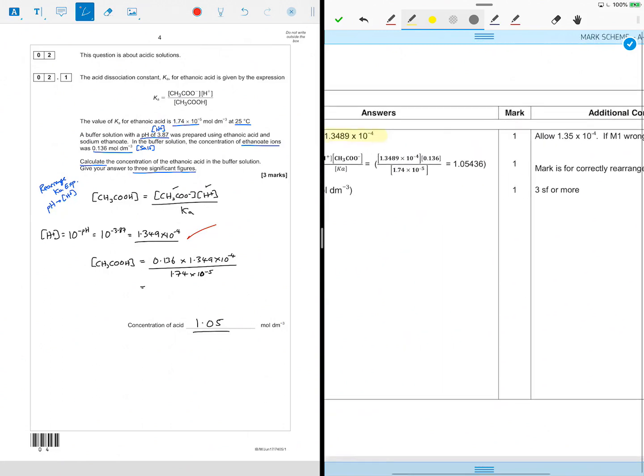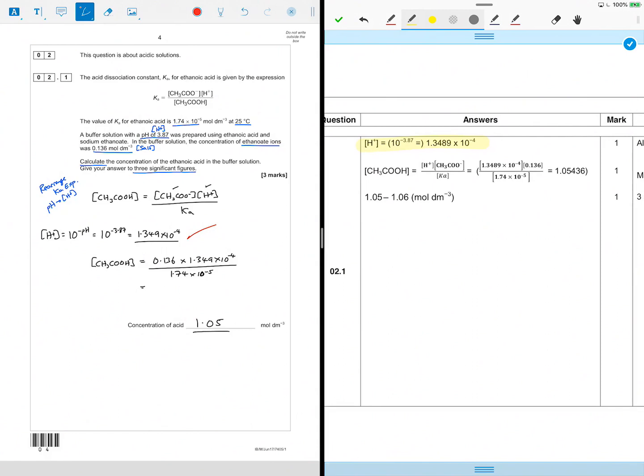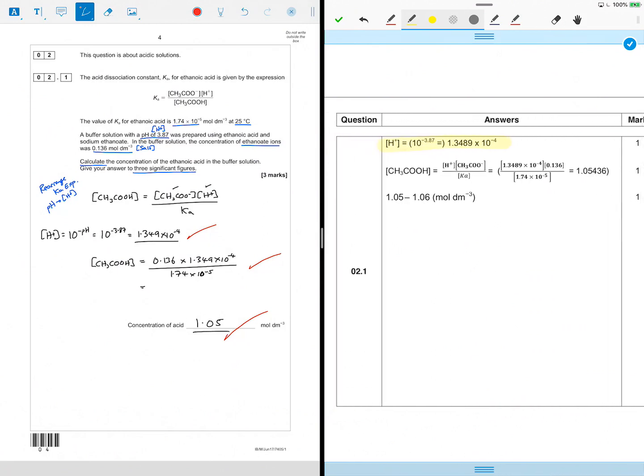One mark for our rearrangement of our expression, which is what I've done there. And then concentration of acid is 1.05. Anything between 1.05 and 1.06 to a minimum of three significant figures. I'm happy with that, that's my three marks.